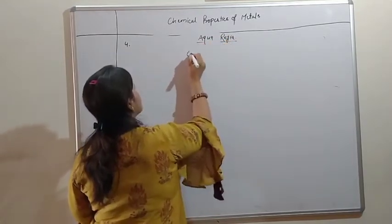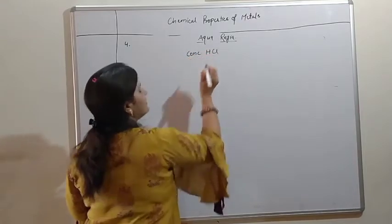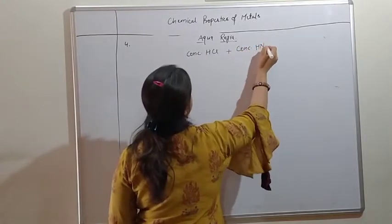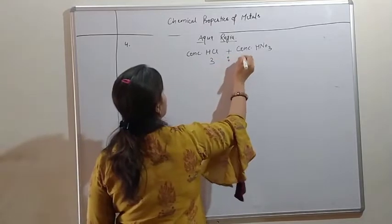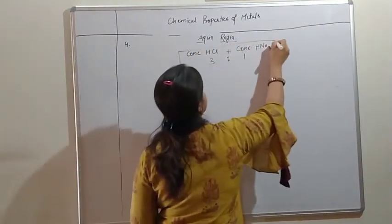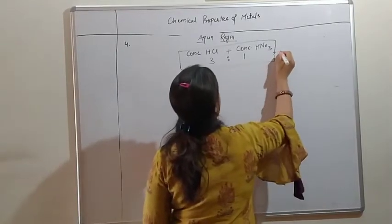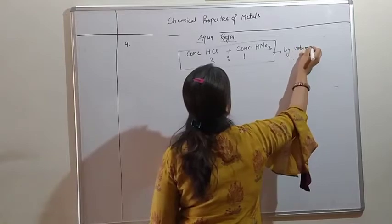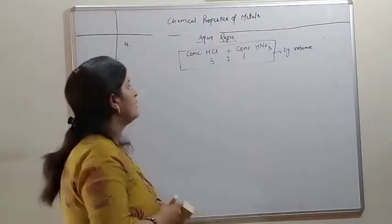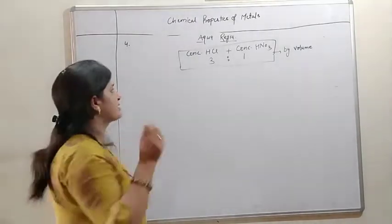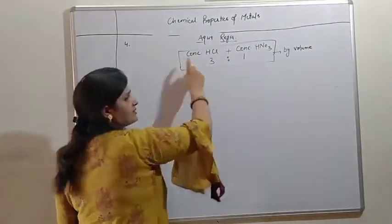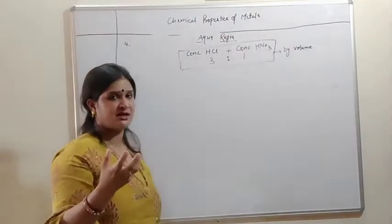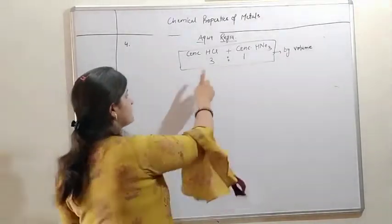It is a mixture of concentrated HCl with concentrated nitric acid in the ratio of 3:1 by volume. Aqua regia is a mixture where we have two concentrated acids. Suppose you're making 100 ml solution, then 75 ml HCl and 25 ml HNO3 by volume.